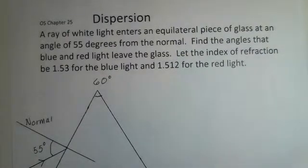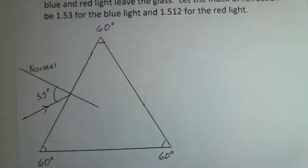It does turn out that the speed of light is different for different frequencies in materials. I'm going to do an example here where we have many colors, white light, entering this equilateral triangle at 55 degrees away from the normal.